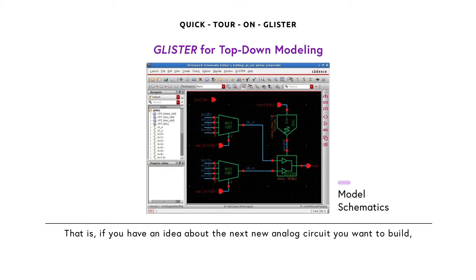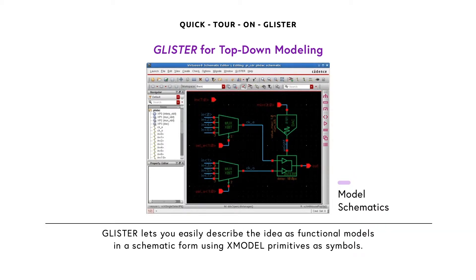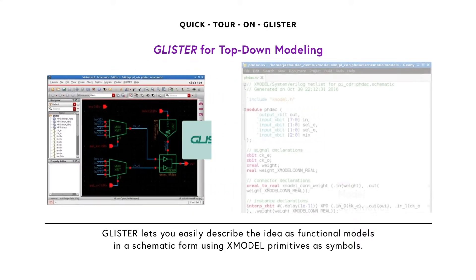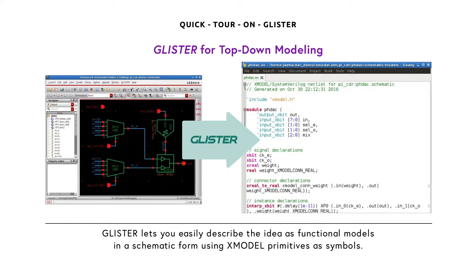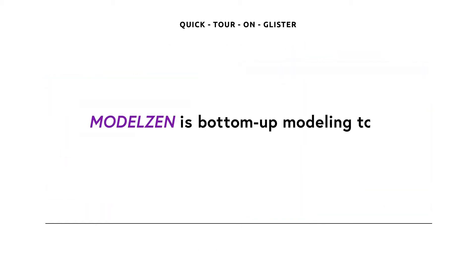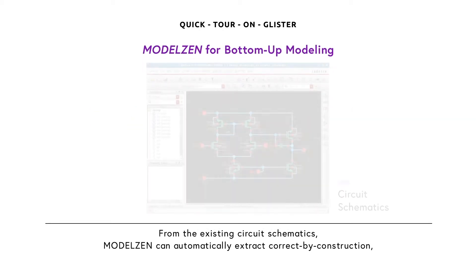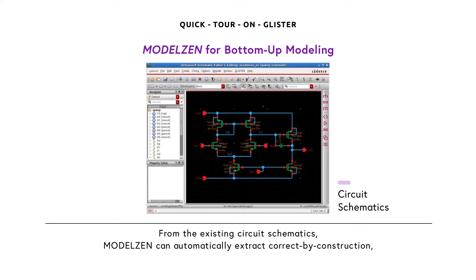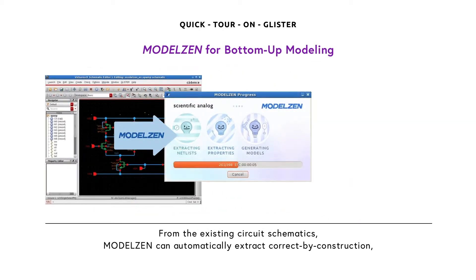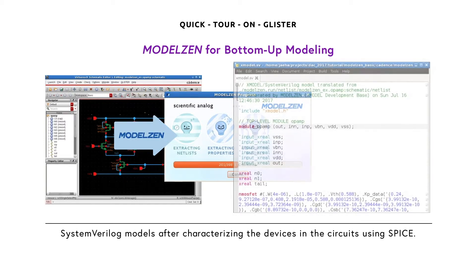That is, if you have an idea about the next new analog circuit you want to build, Glister lets you easily describe the idea as functional models in a schematic form, using X-model primitives as symbols. On the other hand, ModelZen is a bottom-up modeling tool. From the existing circuit schematics, ModelZen can automatically extract correct-by-construction SystemVerilog models after characterizing the devices in the circuits using SPICE.